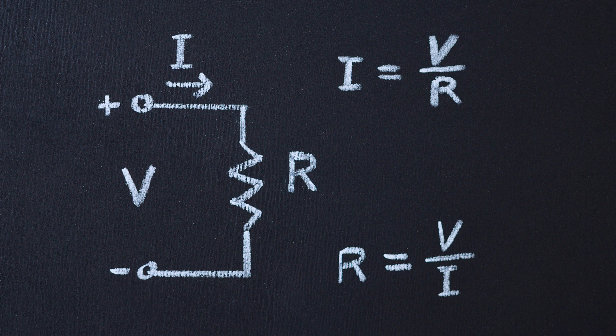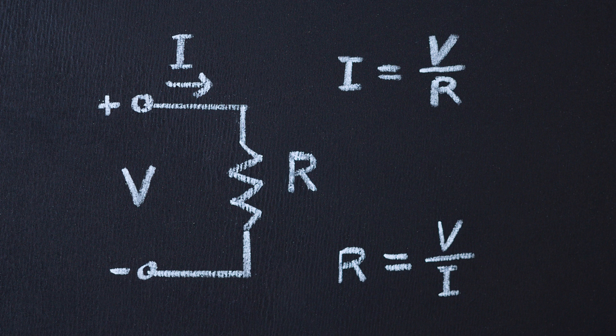This relationship shows how voltage, current, and resistance are interconnected. If you know any two of these values, you can calculate the third.